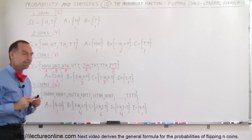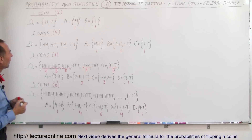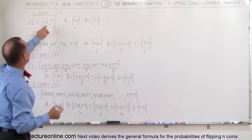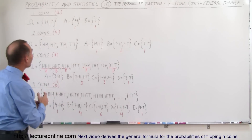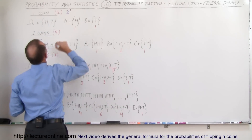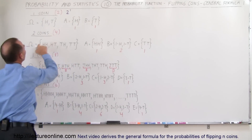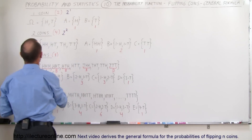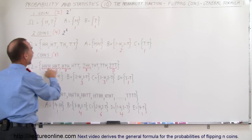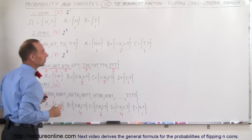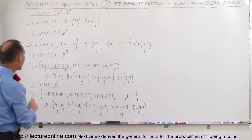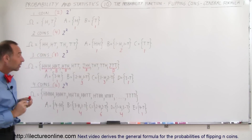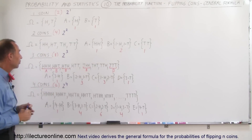Now we see a pattern. With one coin, the number of elements in the sample space is two to the first power. With two coins it's four, which is two to the second power. For three coins, eight possibilities — that's two to the third. And for four coins it's two to the fourth power. Those are the number of elements in the sample space.